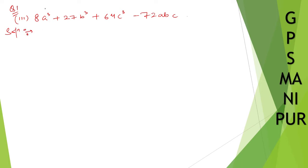8a cube. So, 8a cube you can write down as 2a whole cube. And 27b cube you can write down as 3b whole cube and 64c cube you can write down as 4c whole cube minus 72abc.